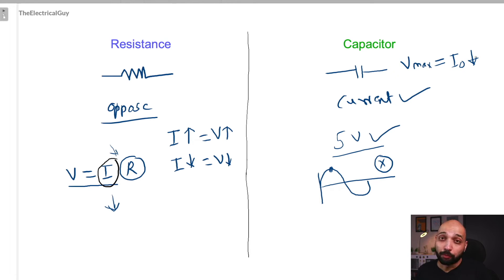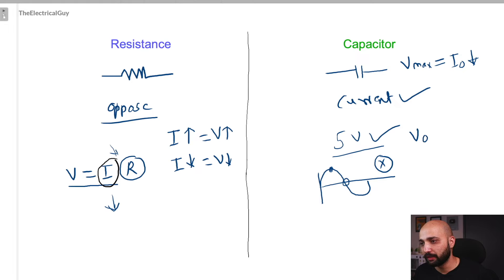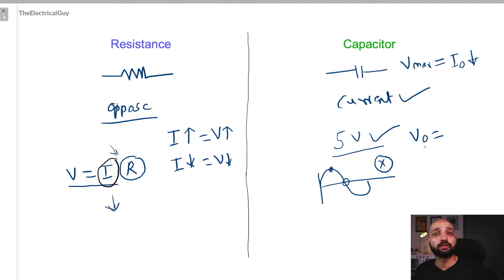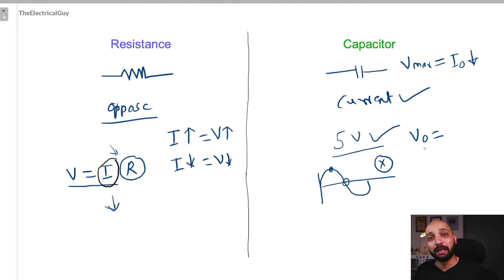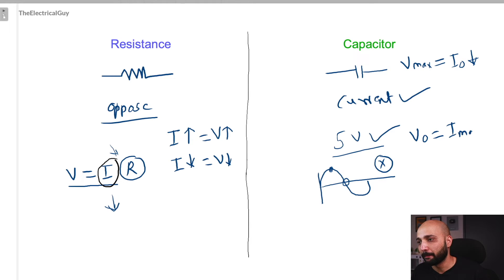The opposite is also true. When voltage is zero, the capacitor will try to take the voltage back to its original position by supplying more current in the circuit, so in that case the current becomes maximum.